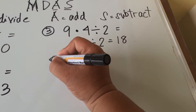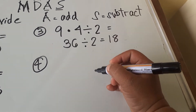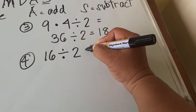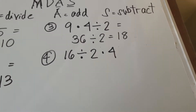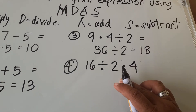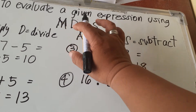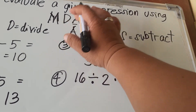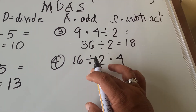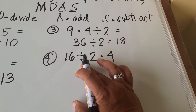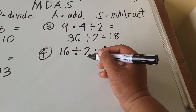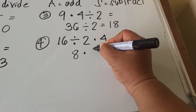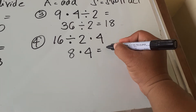But how about if the expression is 16 divided by 2 times 4? What will be the answer? Following M-DAS — multiply or divide, either of the two, whichever comes first. Since divide comes first here, we divide before we multiply. So 16 divided by 2 is equal to 8, times 4, so the answer is equal to 32.